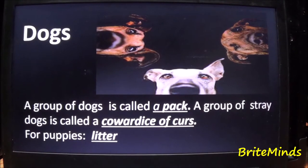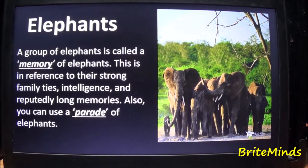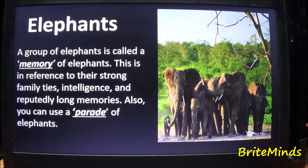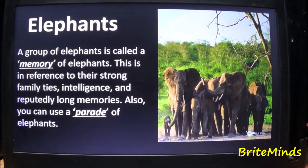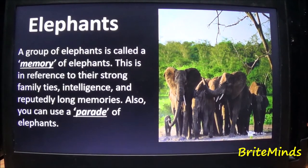Dogs: a group of dogs is called a pack. A group of stray dogs is called a cowardice of curs. For puppies, a litter. Elephants: a group of elephants is called a memory of elephants, in reference to their strong family ties, intelligence, and reputedly long memories. You can also use a parade of elephants.